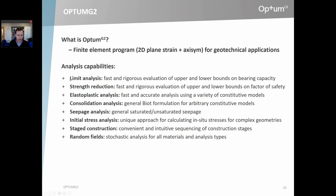Strength reduction is the topic of module 3. In a certain sense, it's the complementary analysis type to limit analysis. We are not looking for limit loads — not looking for the maximum load a structure can sustain — but rather looking for the minimum material parameters a structure needs in order not to be at failure. These parameters are found and then compared to the actual parameters, and in that way a factor of safety can be computed.